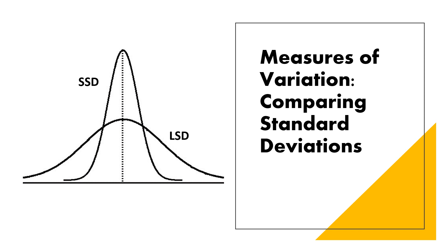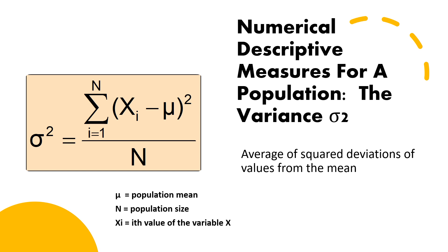When given a graph asking whether the standard deviation is large or small: if the data is more spread out and the slope is gentle, they have a large standard deviation (L stands for large). If the data is not spread out and the peak is high with a steep slope, they have a smaller standard deviation (S stands for small).